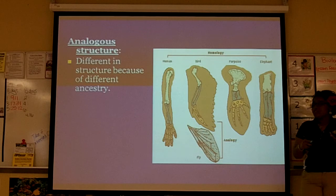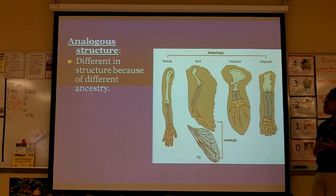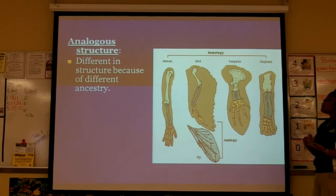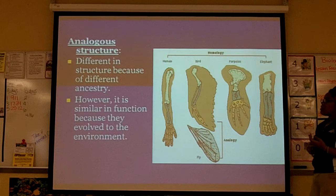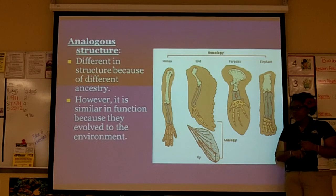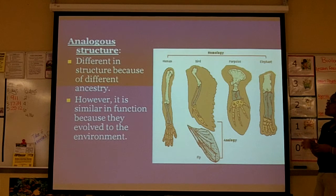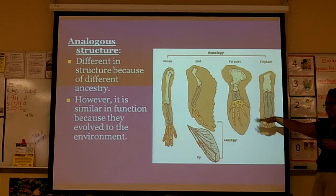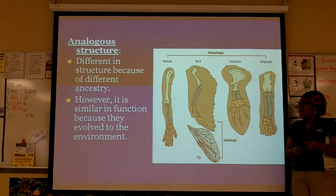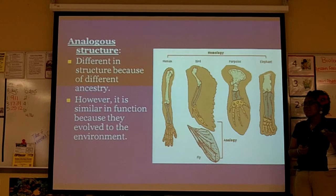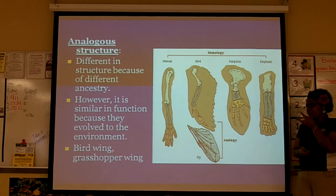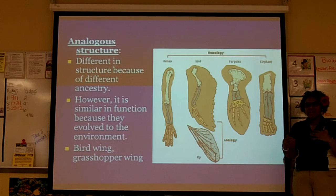Then we have analogous structures, where there are differences in structure because of different ancestry. Human, bird, porpoise, elephant — they might have similar function, like people compare arms of humans to the wings of a bird. Similar function, but they evolved to their respective environments. A bird wing and a grasshopper wing are different, but both are still wings.